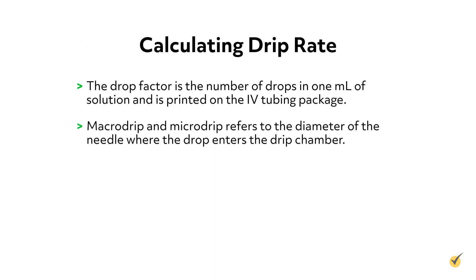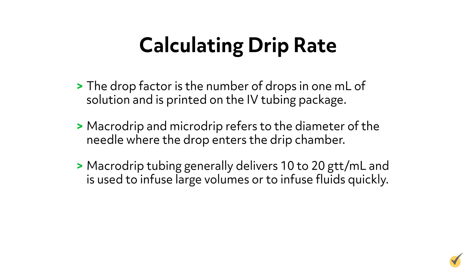Macro drip and micro drip refers to the diameter of the needle where the drop enters the drip chamber. Macro drip tubing generally delivers 10 to 20 drops per milliliter and is used to infuse large volumes or to infuse fluids quickly.